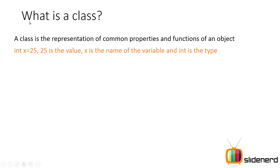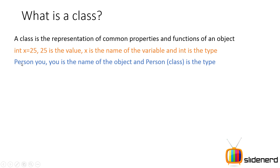For example, if you say int x equals 25, then 25 is the value, x is the name of the variable, and int is the type. If you say person u, then u is the name of the object and person is the class. In other words, a class is nothing but the type of an object.